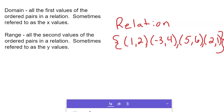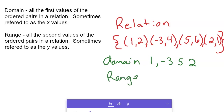So my domain in this case would be one, negative three, five, and two. You could put those in order — probably a good idea from negative three up to five — but that's our domain. My range in this case, since these are discrete points, is pretty easy: two, four, six, and one. Again, it'd be nice to organize that list from least to greatest. That's my domain and range.